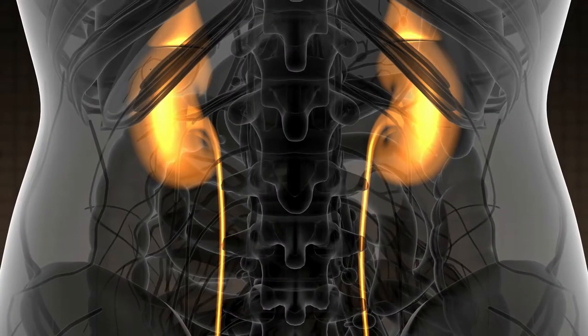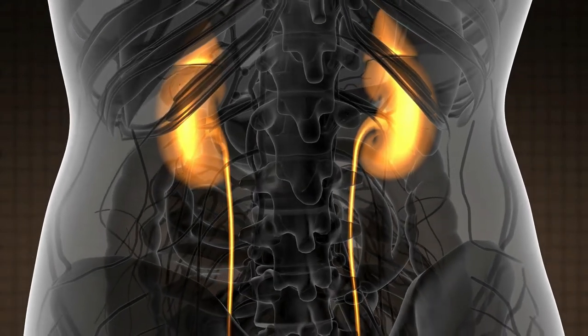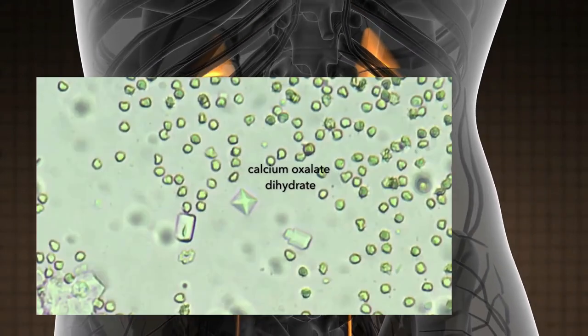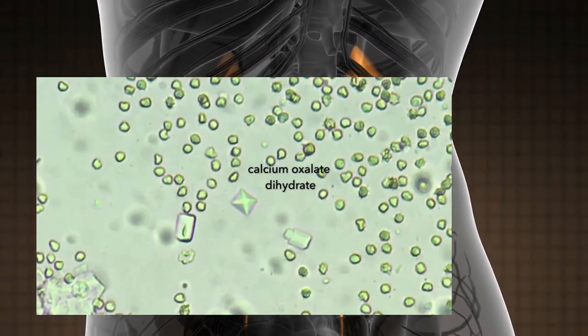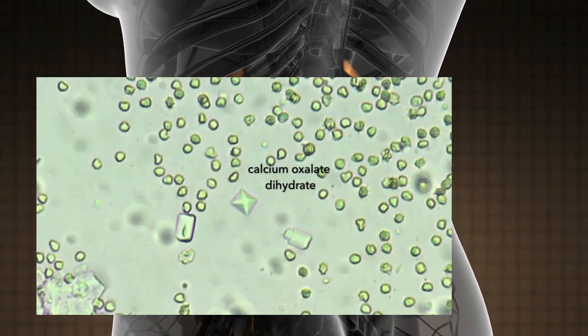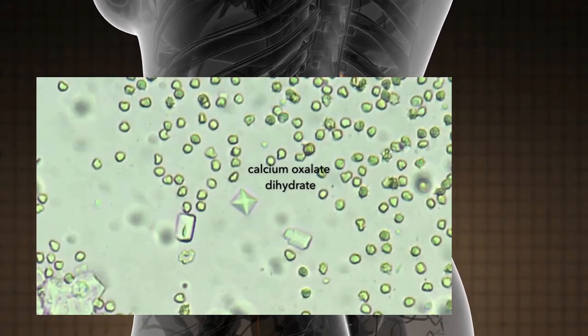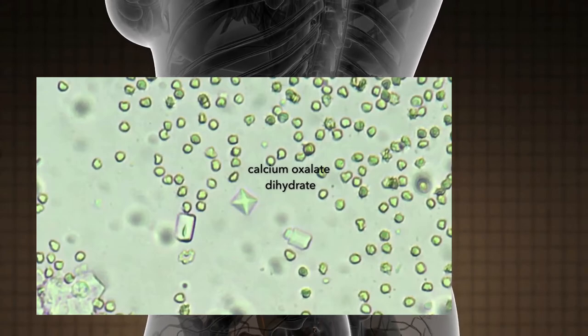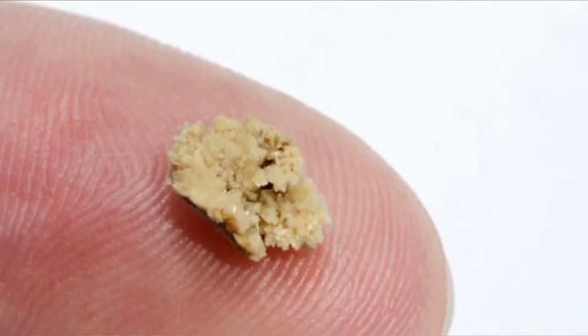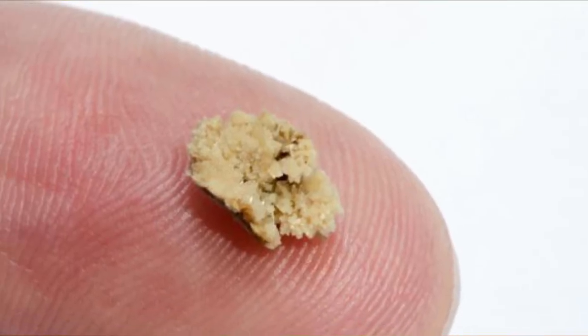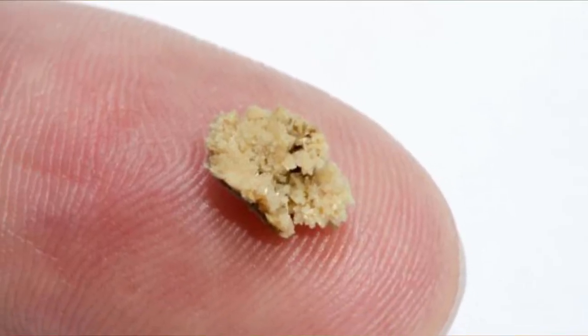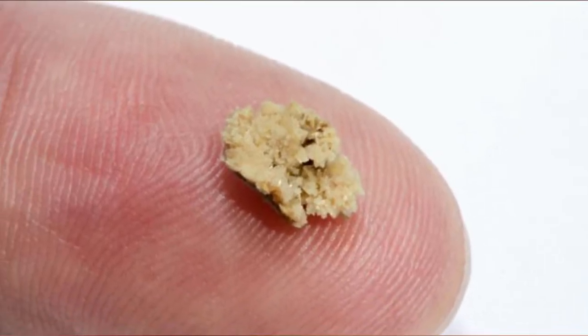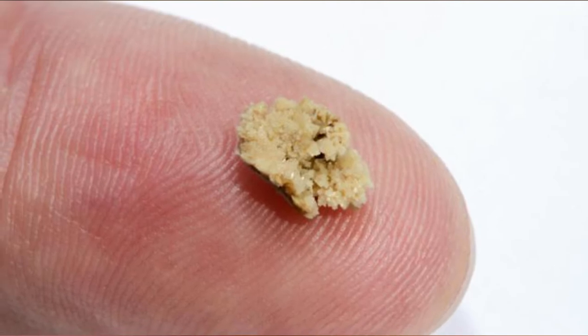The most common type of kidney stone, however, is the calcium oxalate, which like the others, when formed in the kidney, can be small and undetectable, but sometimes they can become quite large.